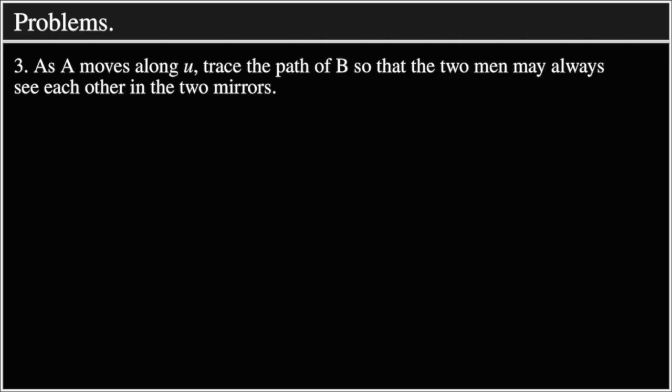Problem 3: As A moves along U, trace the path of B so that the two men may always see each other in the two mirrors.